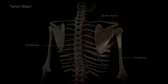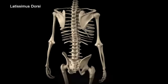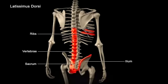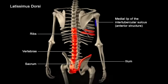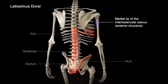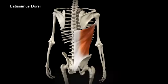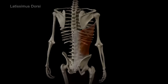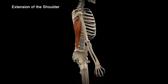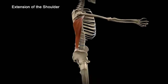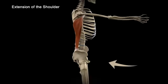The latissimus dorsi muscle originates on the spines and bodies of the vertebrae, the sacrum, the ilium, and the ribs. It inserts on the medial lip of the intertubercular sulcus of the humerus. The teres major and latissimus dorsi act synergistically to extend the shoulder.